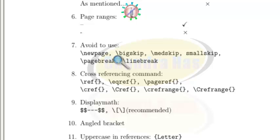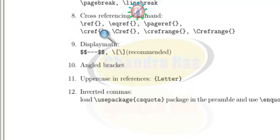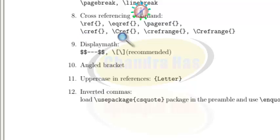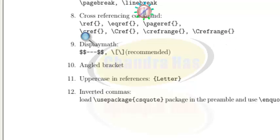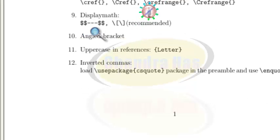In the seventh point, there are commands one should always avoid in a document. For cross-referencing, you should not write anything manually. Instead, I always recommend using \cref, \Cref, \crefrange, and \Crefrange with the help of the cleveref package, for which I have already uploaded a tutorial.